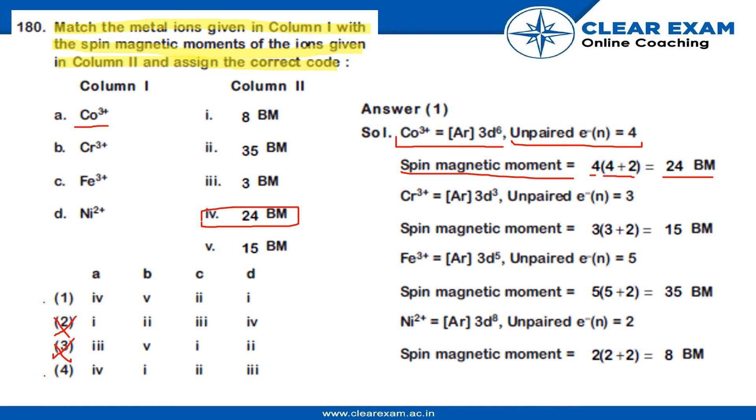Now, we will be moving on to CR3+. CR3+ has the configuration of Ar 3d3 giving unpaired electrons as 3.